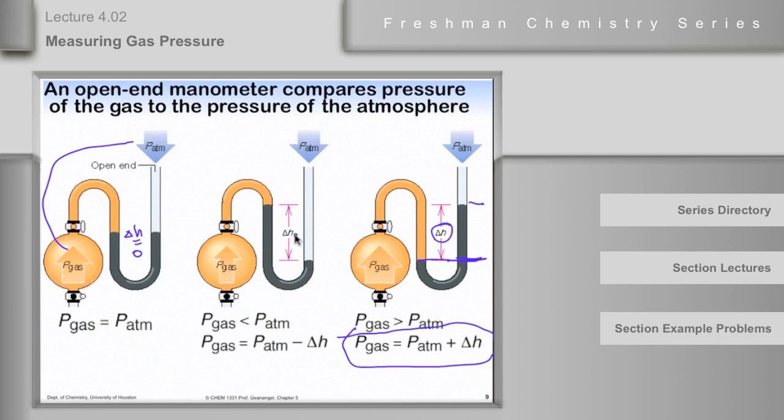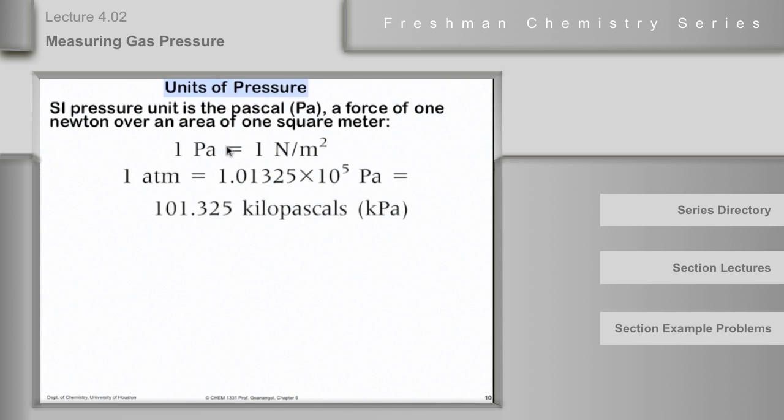In order to answer a question about what is the P_gas when P_atmosphere is thus and delta H is thus, you have to use the right equation. Notice one of them is negative - the delta H term is negative - and one is positive.